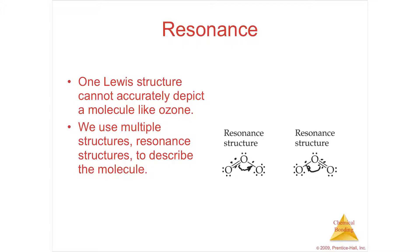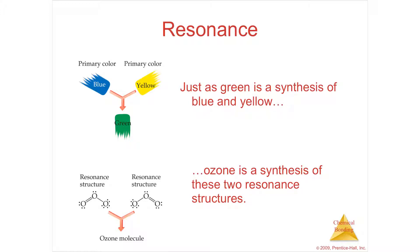The way you show a resonance structure is with a double-headed arrow showing that it's not one or the other, it's both. The analogy given is that just like blue paint and yellow paint together gives you green, it has its own identity. A resonance structure is the same - it's a mixture of both.